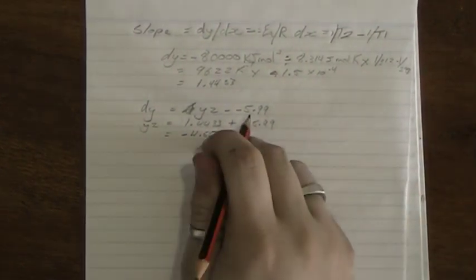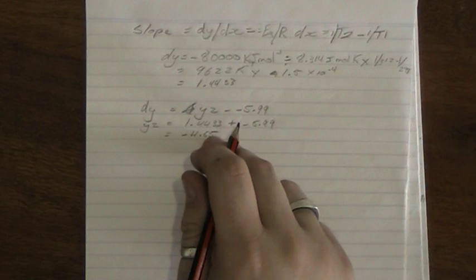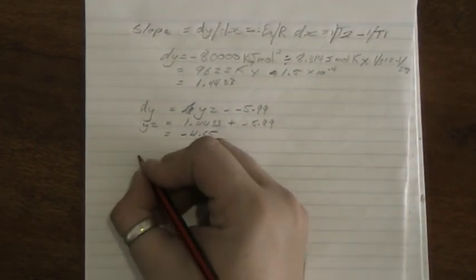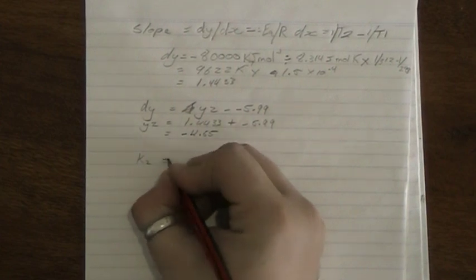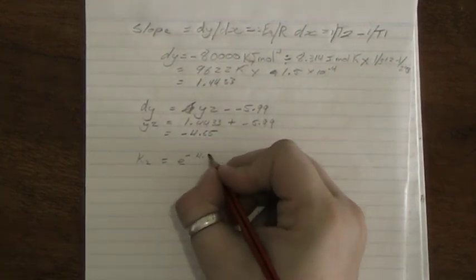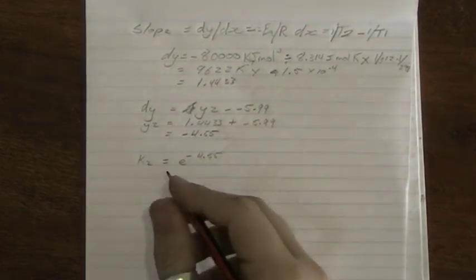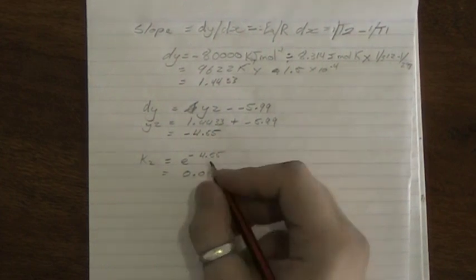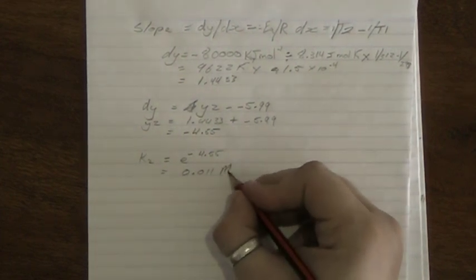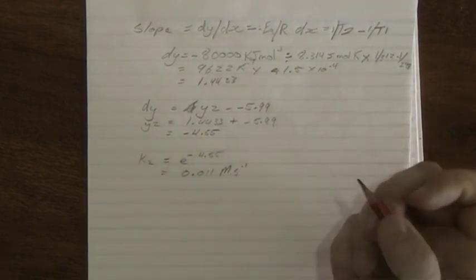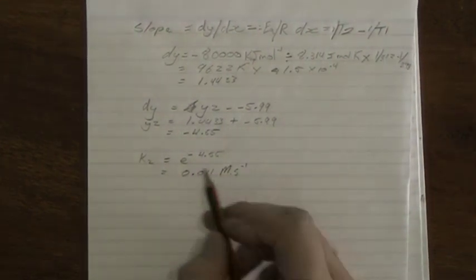We know that's the log, so if we calculate back we can work out what the rate is. If we go e to the negative 4.55, it equals 0.011 moles per second minus 1. Easy, piece of cake. So this is the initial rate at 39 degrees.